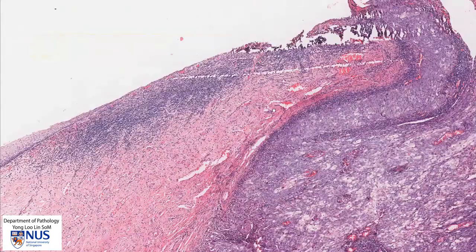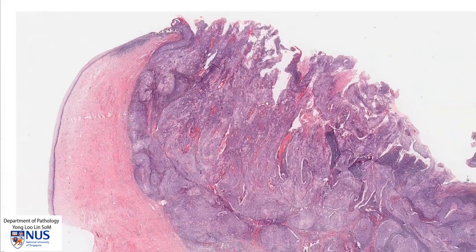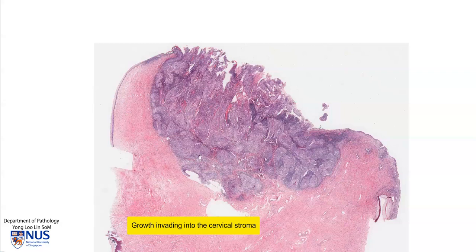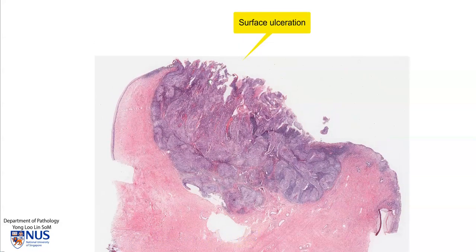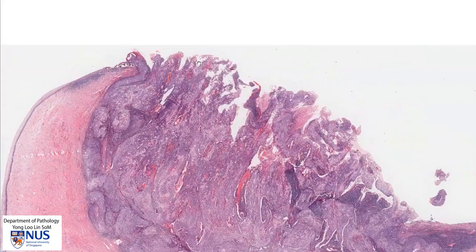Moving to the abnormal area, at low magnification we can see that there is clearly a growth that is dipping all the way into the cervical stroma, going down quite a long distance from the surface epithelium, which is markedly ulcerated. And this ulceration often explains the presence of significant bleeding in this condition.